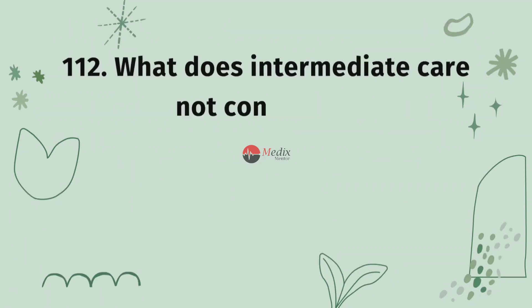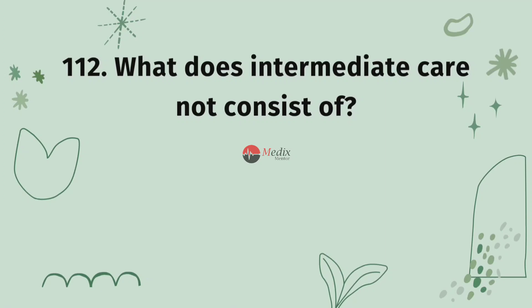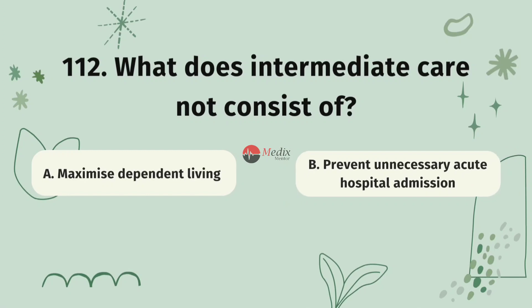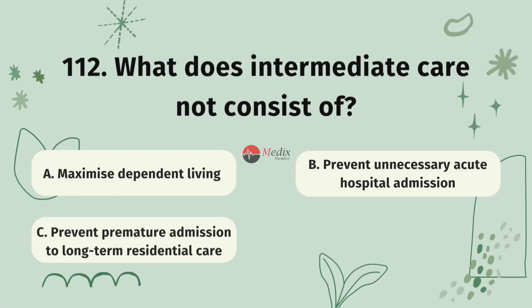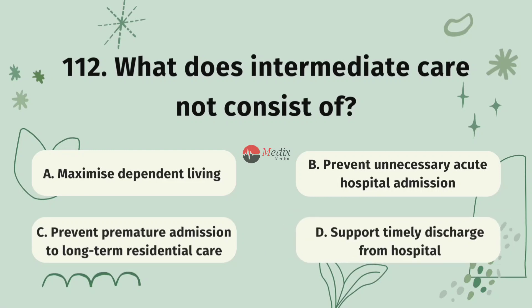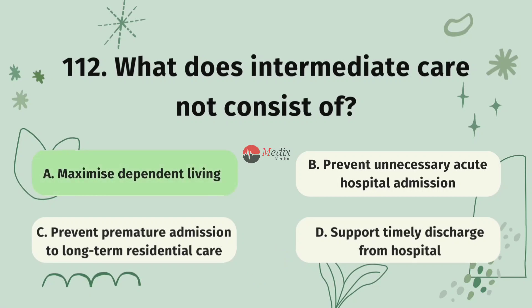Question 112. What does intermediate care not consist of? Option A, maximize dependent living. Option B, prevent unnecessary acute hospital admission. Option C, prevent premature admission to long-term residential care. Option D, support timely discharge from hospital. The correct answer is A.